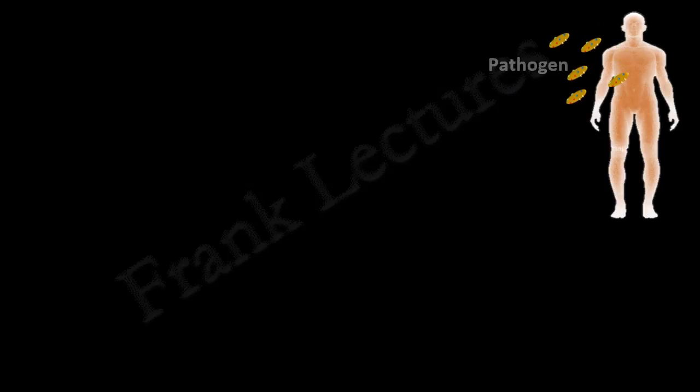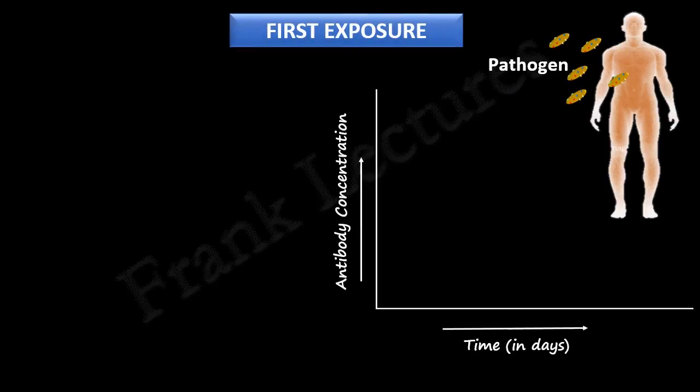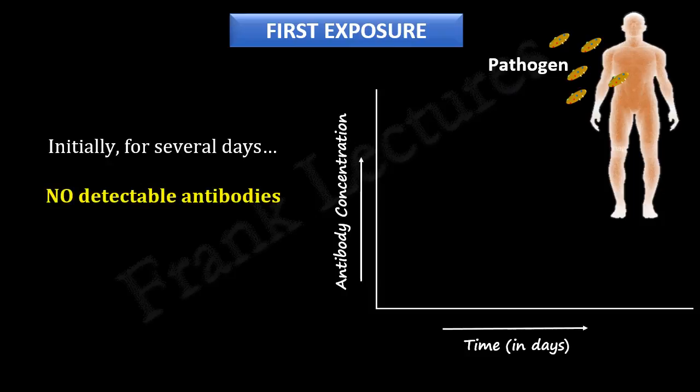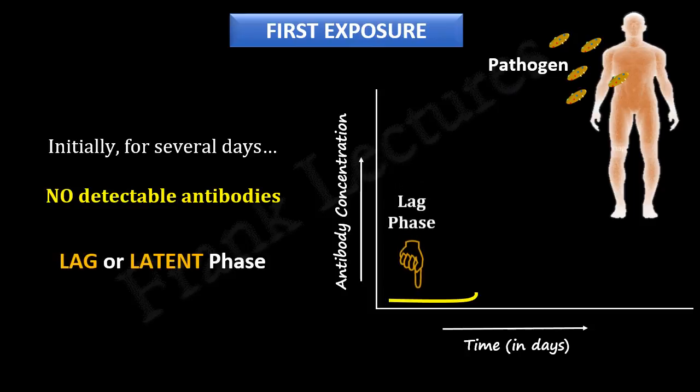Suppose an individual is infected with a pathogen for the first time. Initially, for several days, no antibodies are detectable in the serum of the patient. This period is known as the lag or latent phase. This is the time when B cells recognize the antigen, undergo clonal expansion, and differentiate into antibody-producing plasma cells.